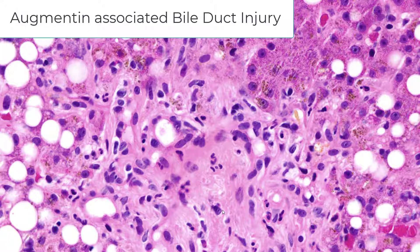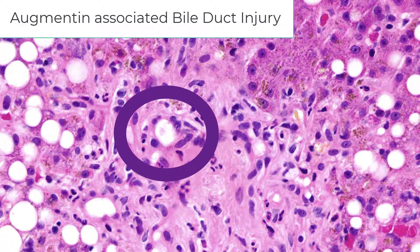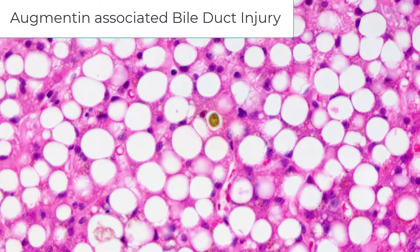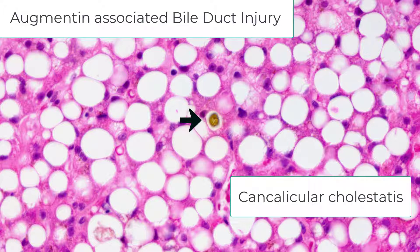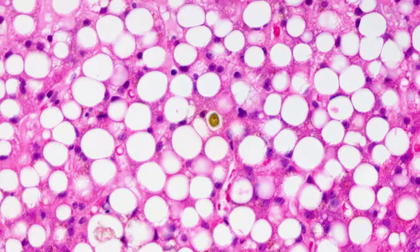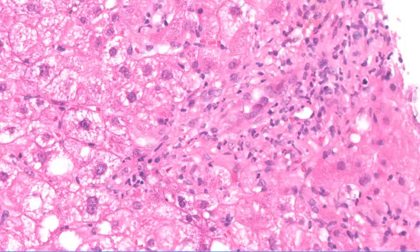This is drug-induced biliary injury. Notice that the bile duct shows significant damage. Drugs can potentially do anything in the liver, and you must consider drug-related injury whether it be a primary biliary destructive disease or a primary hepatitis. Perhaps the best way to distinguish PBC from drug-related bile duct injury is to look for cholestasis. In most cases of acute cholestatic drug-related liver injury, you will see bile plugs. In PBC, on the other hand, you will not see bile plugs until the late phase of the disease — so in early PBC, bile plugs are absent.